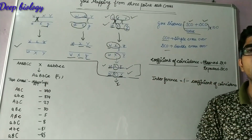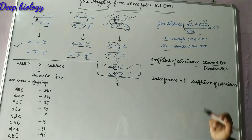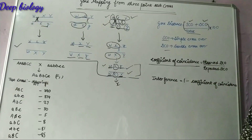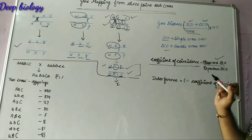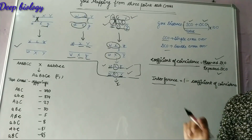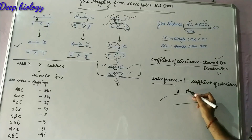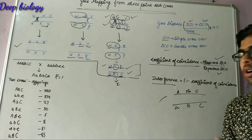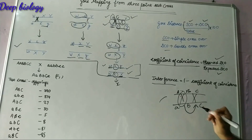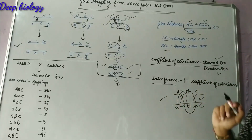The coefficient of coincidence refers to the chances of two crossovers occurring in a side-by-side region on a chromosome. It is calculated as observed double crossover divided by expected double crossover. Interference is the opposite — when two crossovers occur in a homologous chromosome, one crossover inhibits the other. Interference is calculated as one minus the coefficient of coincidence.